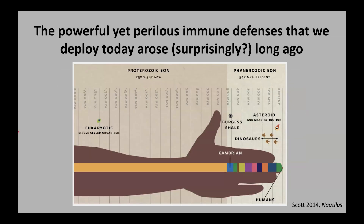The powerful yet perilous immune defenses that we deploy today arose really a long time ago — to some people, a surprisingly long time ago. This depiction of evolutionary time leading up to the evolution of humans is a favorite of mine because it's sort of intuitive. It maps it onto the length of a human forearm, where the evolution of eukaryotes, our most ancient single-celled but organelle-deploying ancestors, is way back on the forearm.